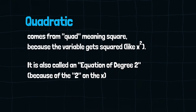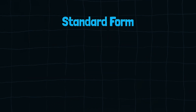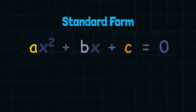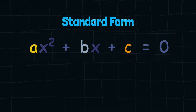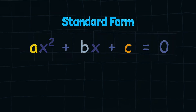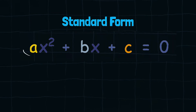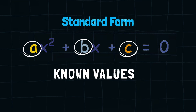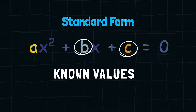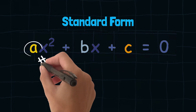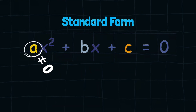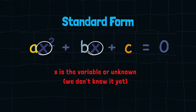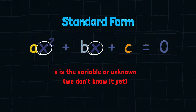The standard form of a quadratic equation looks like this: ax squared plus bx plus c equals 0. a, b, and c are known values, but a can't be 0. x is the variable or unknown — it means we don't know it yet.